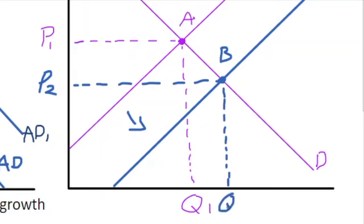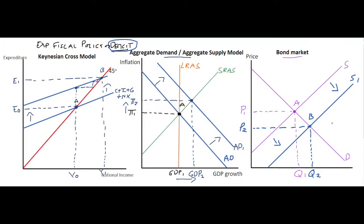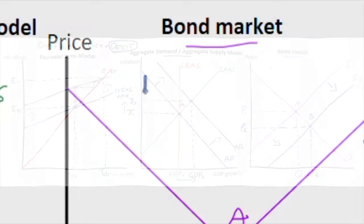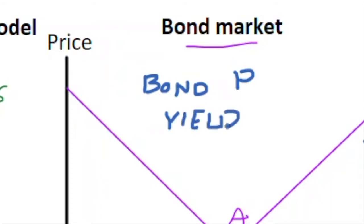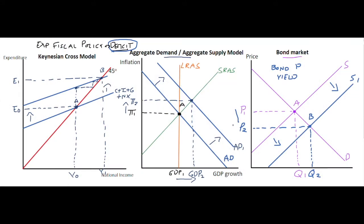There is an inverse relationship between bond price and bond yield — the interest rate. So if the price of bonds is dropping, the interest rate and yield must be increasing. This means that the cost of borrowing for the government is increasing in the economy.